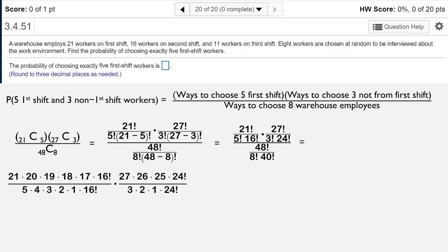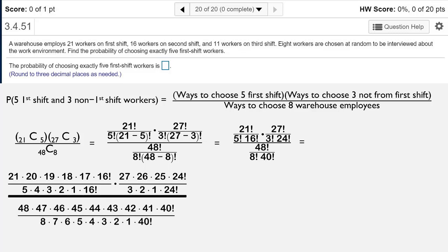So if we expand these out, in the first fraction of the numerator, we're going to expand the 21 factorial until we get to the 16 factorial that we can reduce from its denominator. For the second fraction we're going to expand the 27 factorial until we see the 24 factorial. And then in the denominator we're going to expand the 48 factorial until we see the 40 factorial. So we have 16 factorials on top and bottom, 24 factorials on top and bottom, 40 factorials on top and bottom. All of those reduce away.